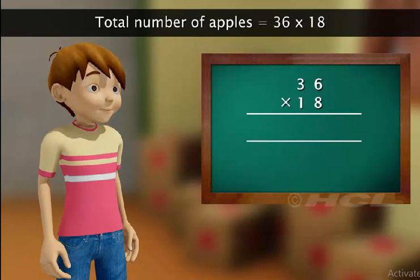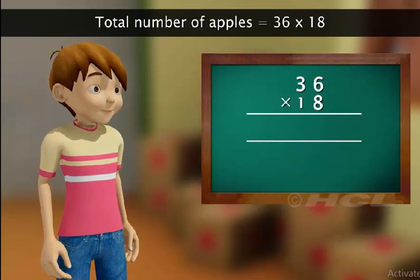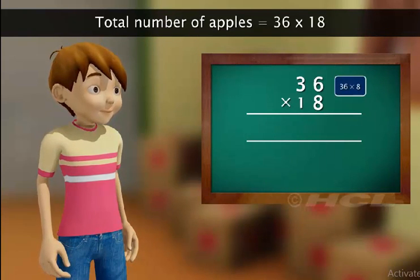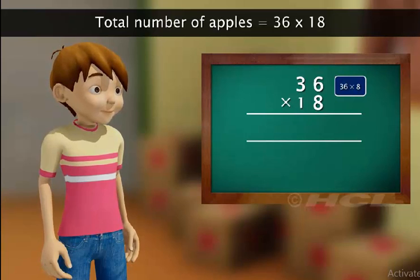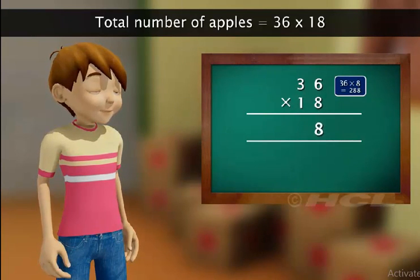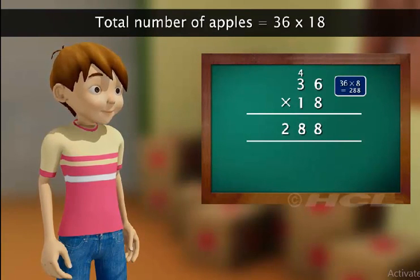We always start multiplying the first number by the unit's digit of the second number. So, we first multiply 36 by 8. This gives 288 as the product. We write this first product as shown. Sam did this step correctly.